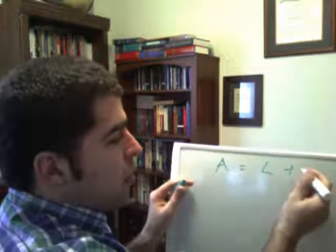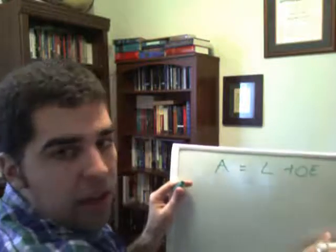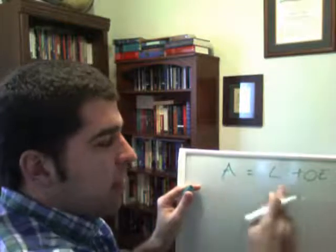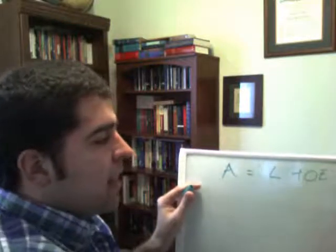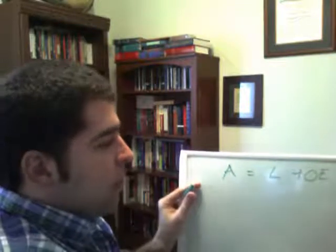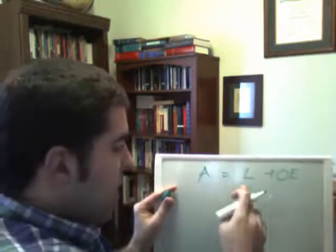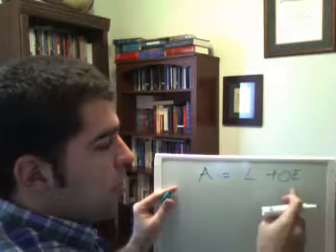equals Liabilities plus Owner's Equity. This is our basic accounting equation. It always has to be in balance - assets on the left side, liabilities and owner's equity on the right side. Let's define the terms first.